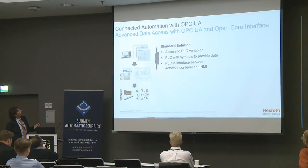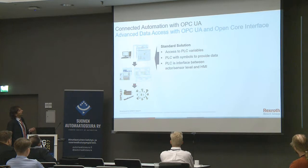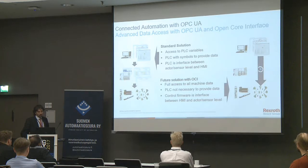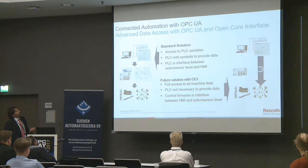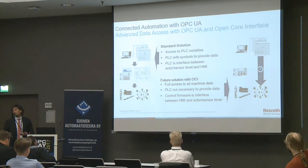Here you can see how communication from an HMI via OPC UA to the sensor/actor level is normally done. The HMI with OPC UA has access to the PLC variables, and the PLC works as an interface between the sensor and actor level. Every variable you want to see has to be programmed in the PLC. In our solution using OPC UA and our OpenCore Interface, we have direct OPC UA access to the actor/sensor level of the machine. The PLC is not necessary to provide the data — all data about the sensor actors is immediately available without changing any line of PLC code.